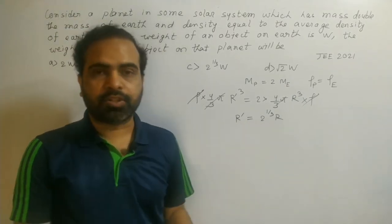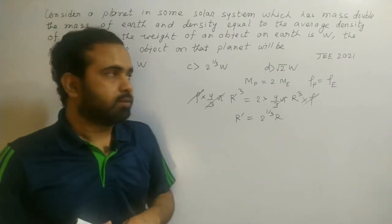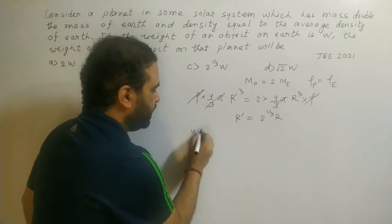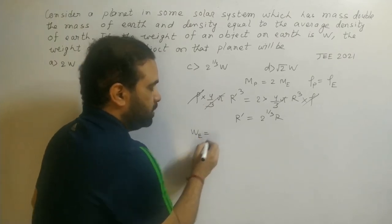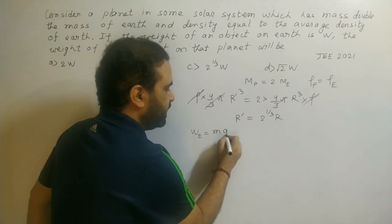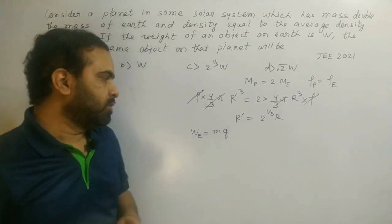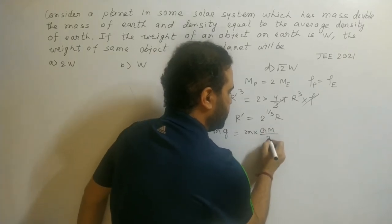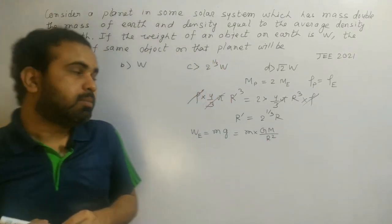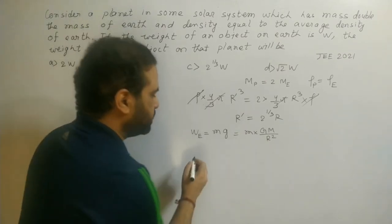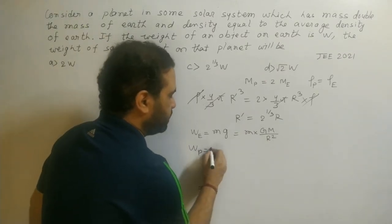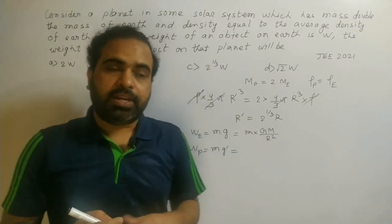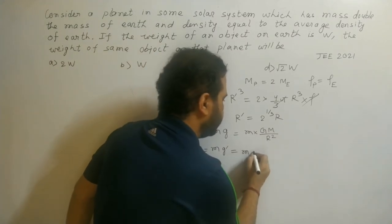Now we focus on weight. Weight on the surface of Earth is W_E = mg = m × (GM_E / r²). We then calculate the weight on the surface of the planet: W_P = m × g' = m × (GM' / r'²), where m is the same object.